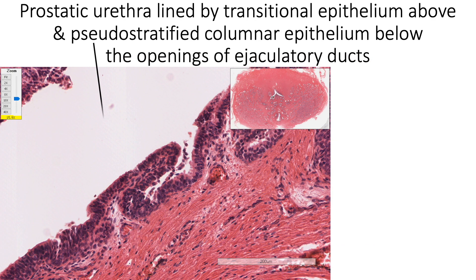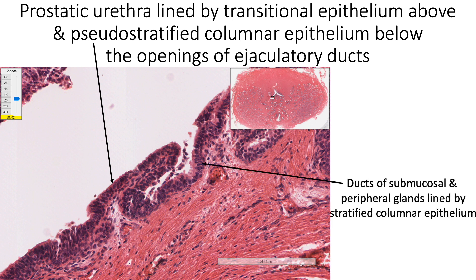The prostatic urethra is lined by transitional epithelium above the level of the openings of the ejaculatory ducts, and by pseudostratified columnar epithelium below that level. The ducts of submucosal and peripheral glands are lined by stratified columnar epithelium, with a basal layer of cuboidal cells and a luminal layer of columnar cells.